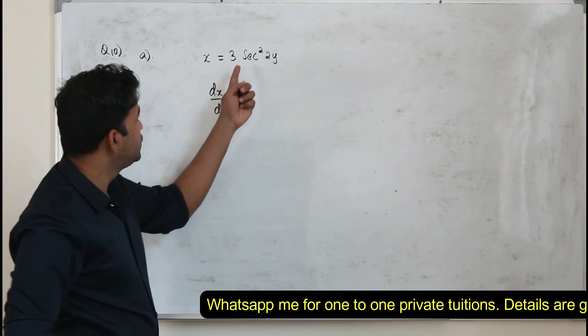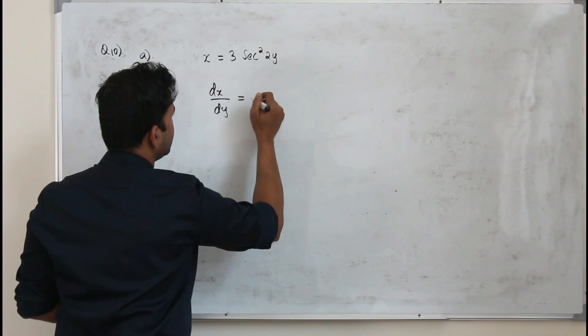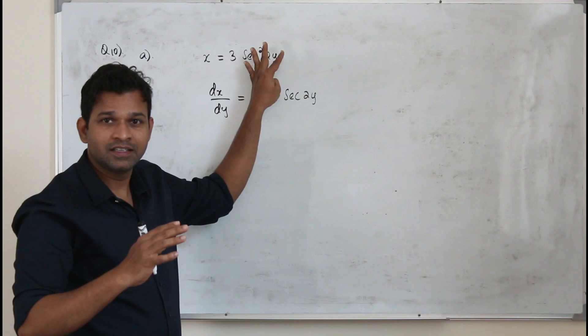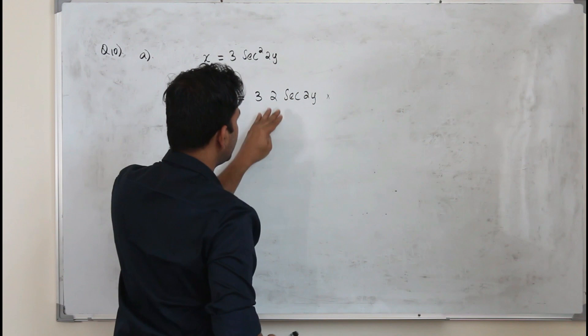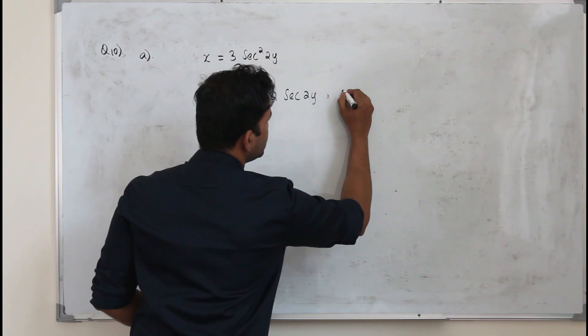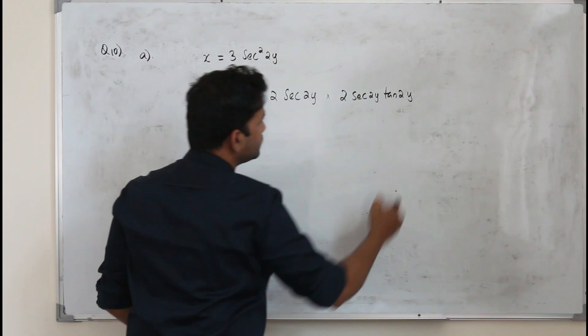To differentiate this we are going to use the chain rule. 3 is a constant. The derivative of x squared is 2x. Taking sec(2y) as x, the derivative gives 2x times — but you cannot stop here because we are applying the chain rule. So now you need to differentiate the function considered as x. The derivative of sec(2y) is 2 sec(2y) times tan(2y).